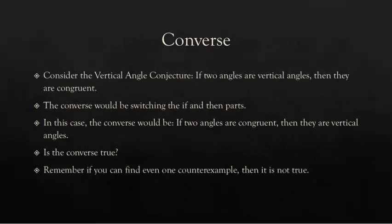If you can find even one counterexample, meaning one example that finds two congruent angles that are not vertical angles, then it's not true. Here would be one example. If I have a 90-degree angle here and a 90-degree angle over here, they are congruent angles. I can mark them as congruent. But they don't use the same lines. They're not opposite of each other. So these are not vertical angles. That means that the converse of the vertical angle conjecture is not true.